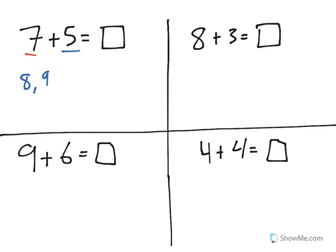So that would be 8, 9, 10, 11, 12. Our answer is 12. As you can see I counted five more and I got to 12. Counting on is one strategy.